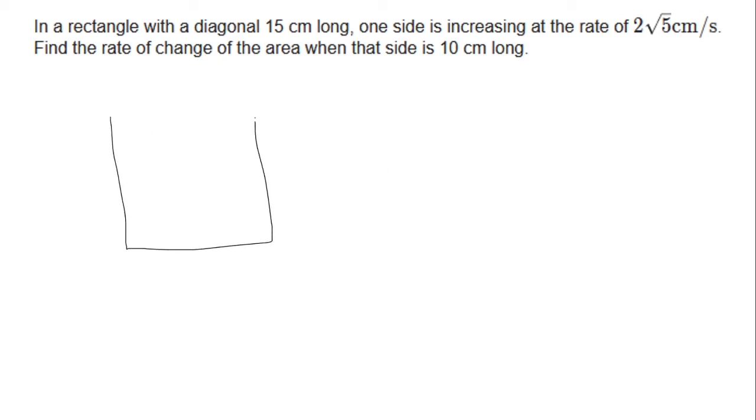We're given a rectangle whose diagonal is 15 centimeters long. We know one side is increasing at the rate of 2 times the square root of 5 centimeters per second. We want to find the rate of change of the area when that side is 10 centimeters long. So we don't know what the base and the height is, so what we're going to say is the base is X, and so by the Pythagorean theorem this is the square root of 225 minus X squared.